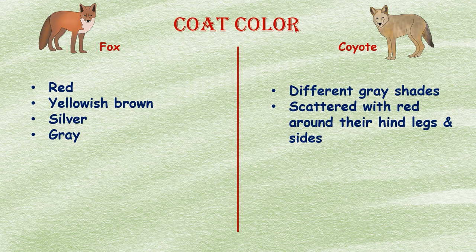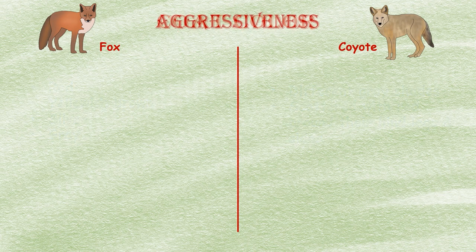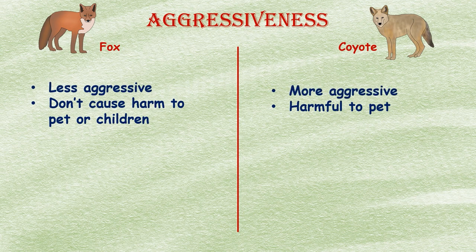The coat color of the fox varies greatly — various fox species have different colors; some have red color while others have yellowish-brown, silver, or gray color. Coyotes don't have significant color differences; they have different gray shades scattered with red around their hind legs and sides.